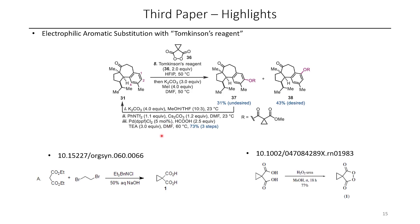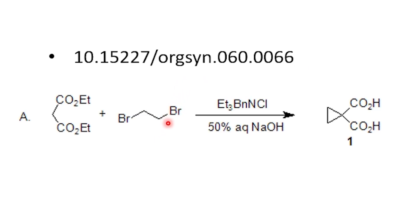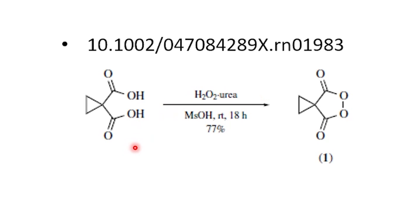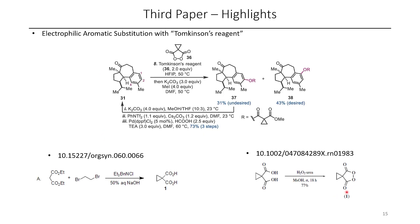Tomkinson's reagent is readily available. This can be formed through the cyclopropanation of diethylmalonate using dibromoethane, and subsequent hydrolysis affords the biscarboxylic acid. Additionally, the cyclopropane dicarboxylic acid can be treated with hydrogen peroxide as the urea complex to generate this peroxide-bis-lactone-anhydride type species. I thought this was a really cool reagent — I hadn't seen these types of oxidations before — and if you've ever seen this used in a paper, I'd love to see more examples in the comments.